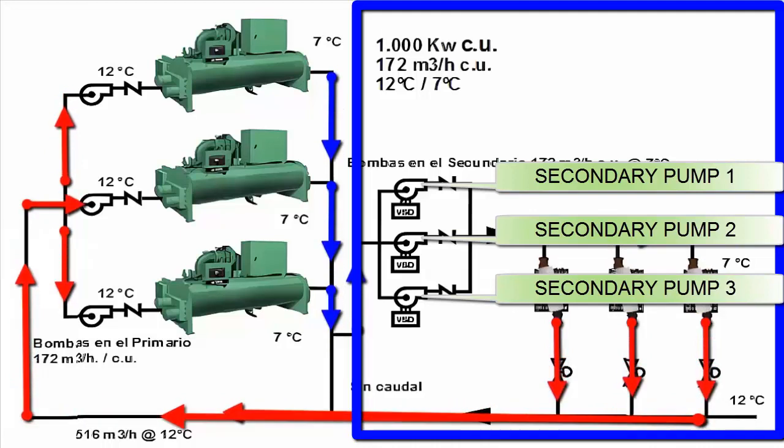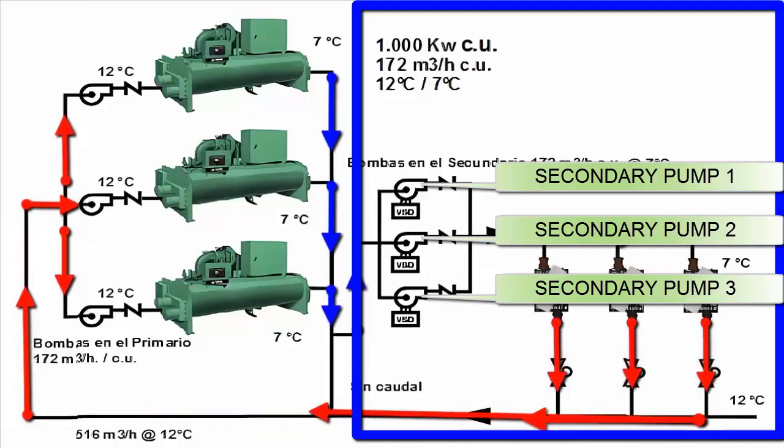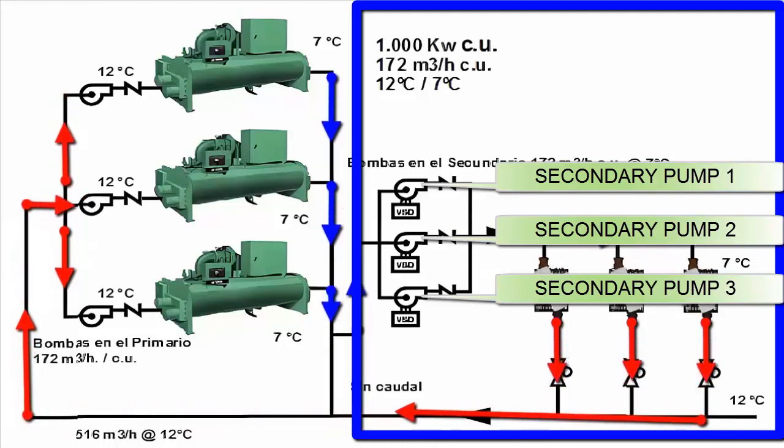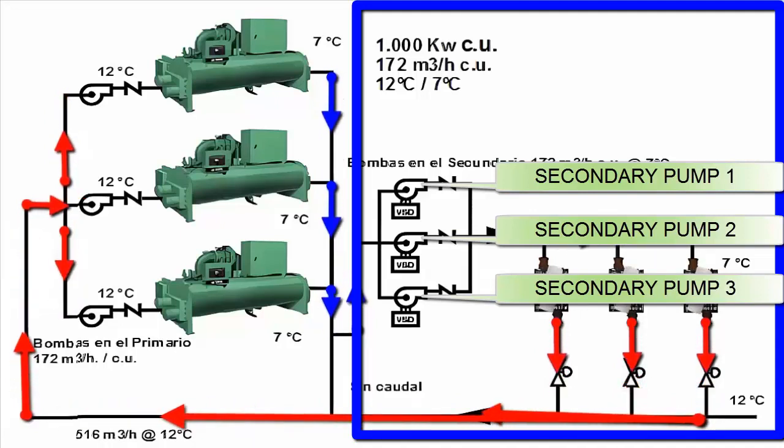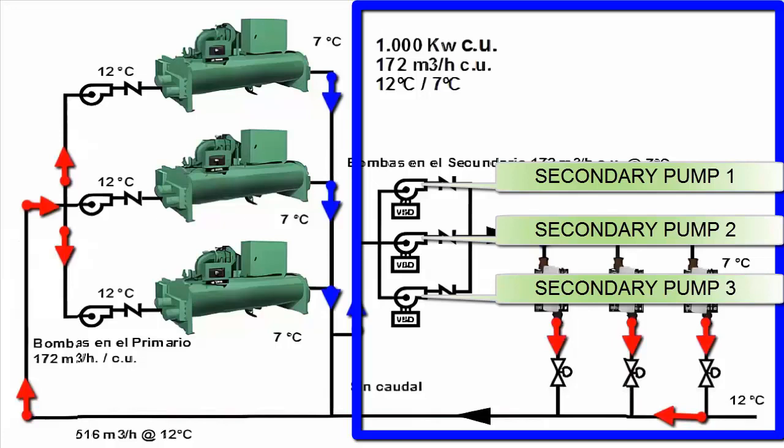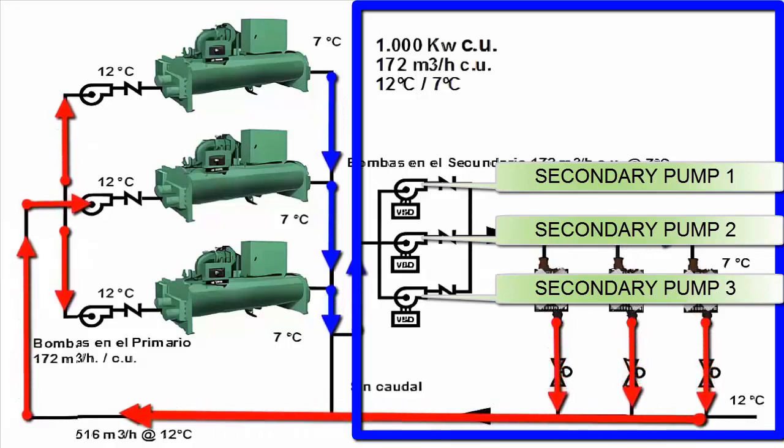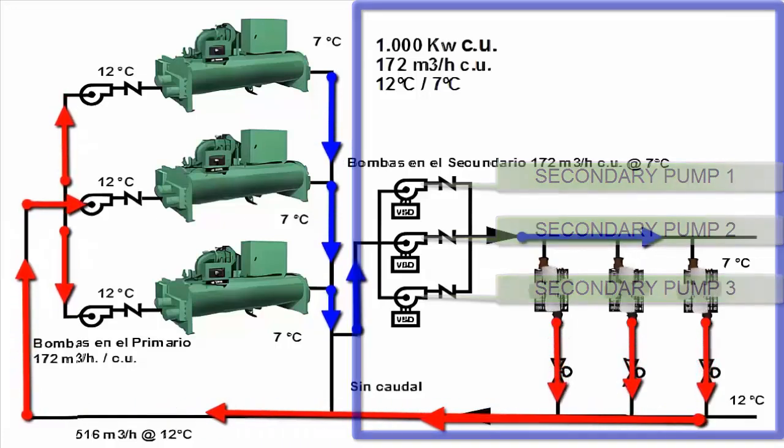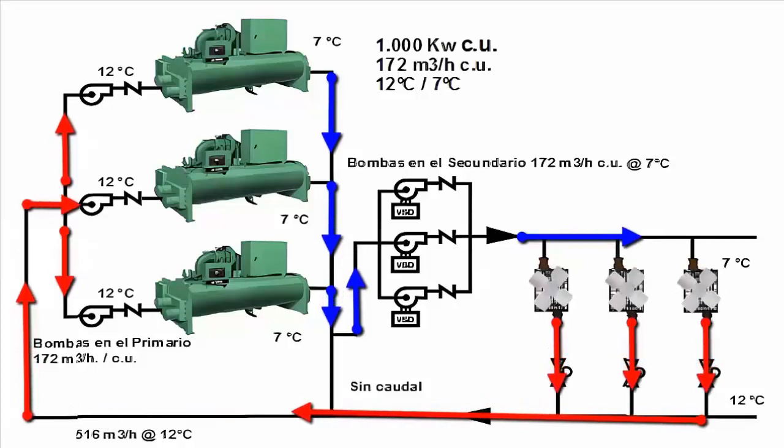This means the motors vary their speeds for RPM, which in turn changes the flow rate. The three pumps come together and send a single flow rate, while in the primary circuit, each pump sends water to its respective chiller.